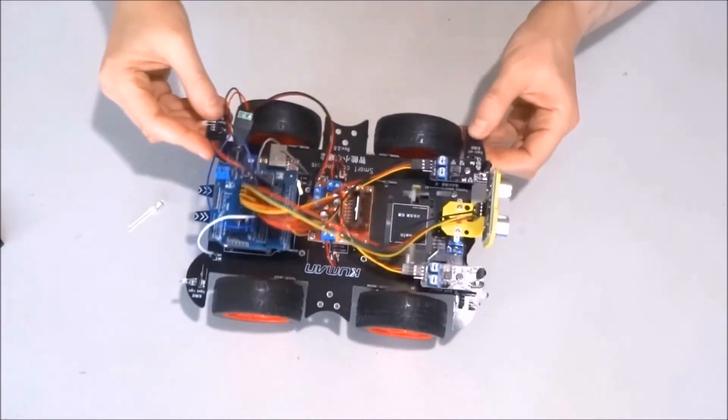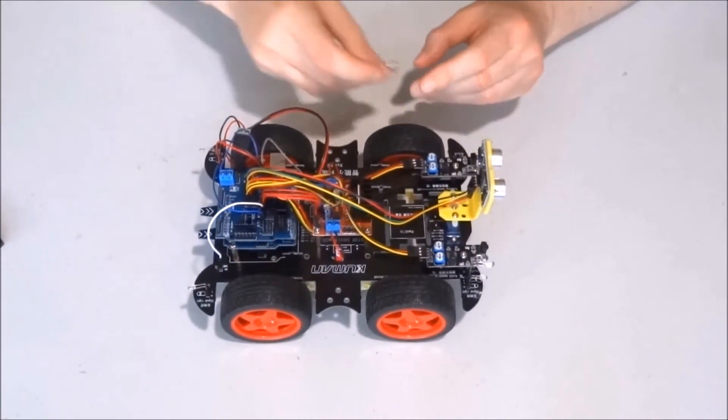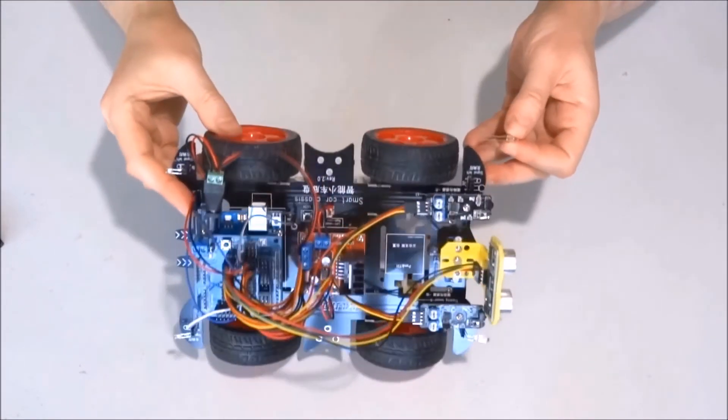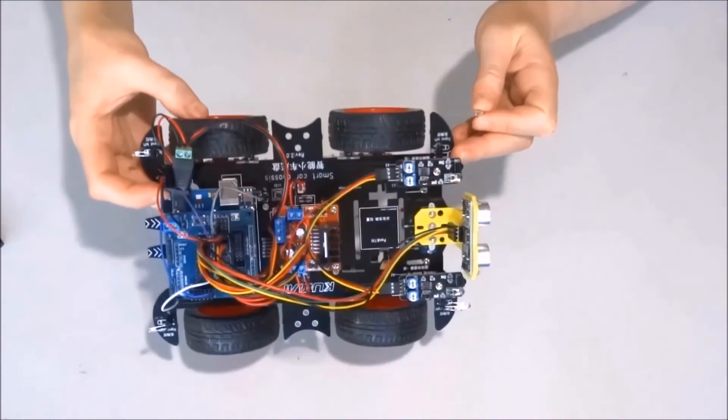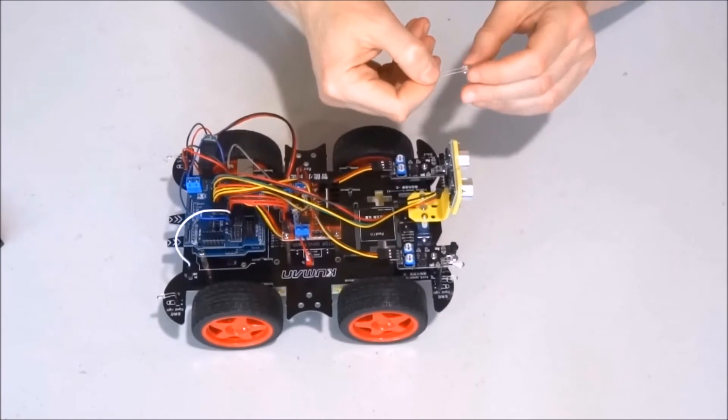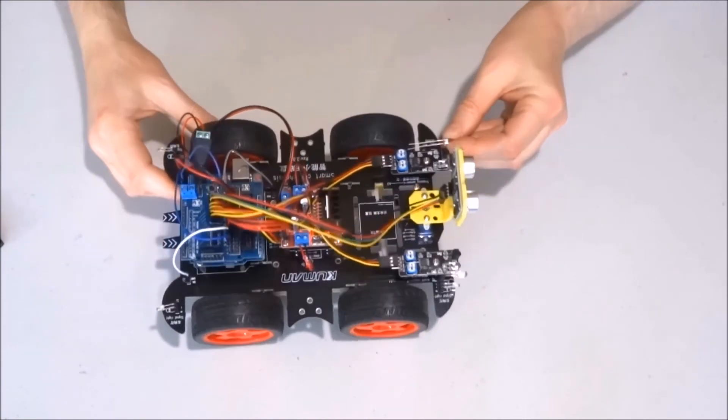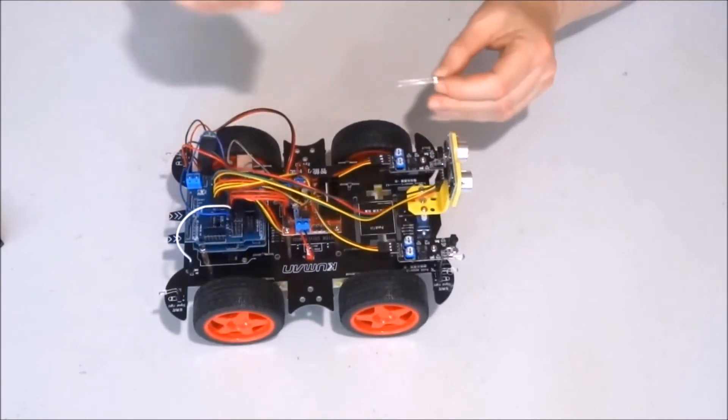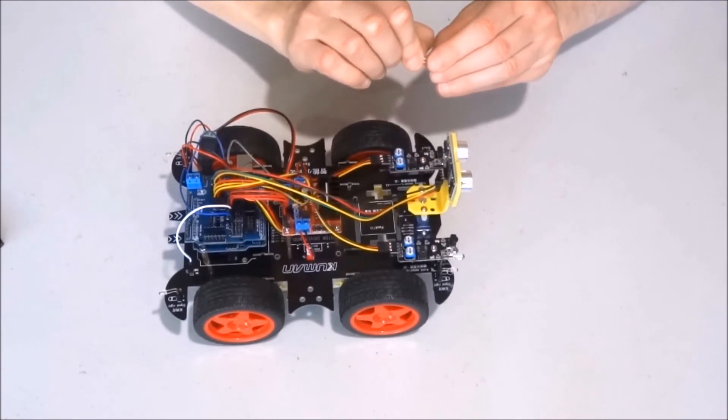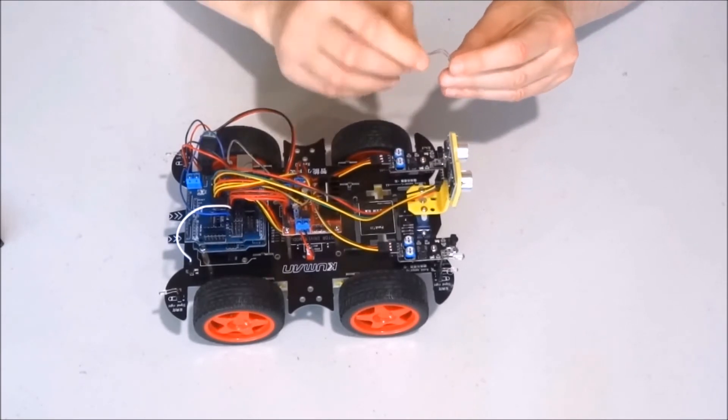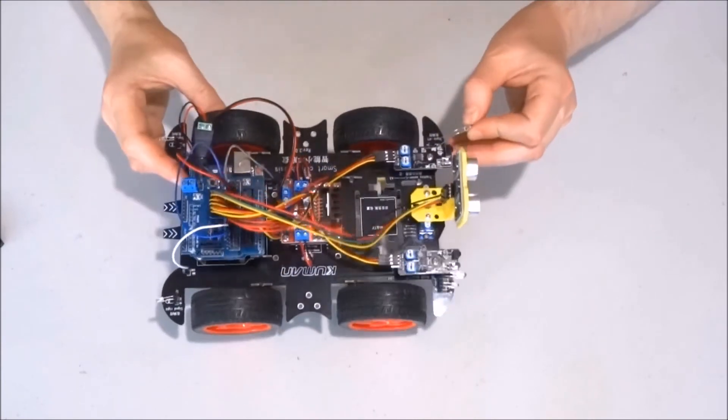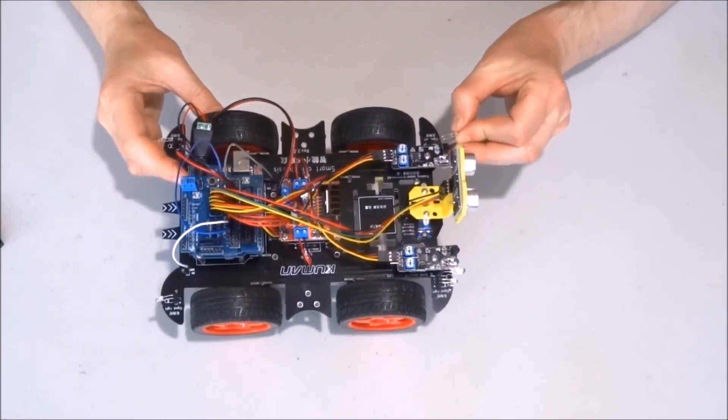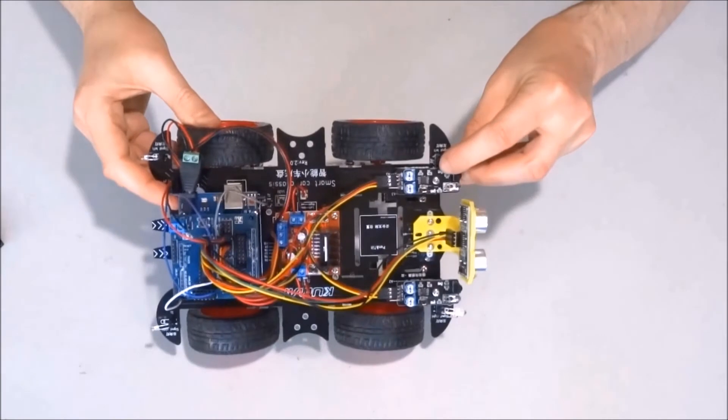Now, the remaining two LEDs. I will start with the big one. The positive is on the inside of the car. So, it will be oriented like this. Bend it. And insert the two pins in the pin header.